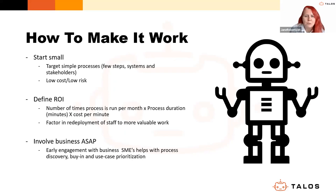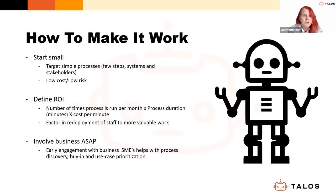Let's talk about how to make automation work in your organization. Over three years working with a wide range of organizations — councils, not-for-profits, educational institutions, pharmaceutical companies, private health insurers, government agencies, and several manufacturers — we've honed our approach to back-office process automation. The most important thing is to start small: pick a simple process with just a few steps, minimal systems, and minimal stakeholders involved. That keeps it low cost and low risk. You don't want to overreach and under-deliver.